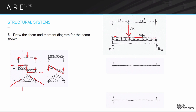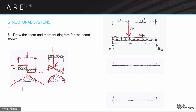At any given point, the value on the shear diagram tells you the slope of the moment diagram at that same point. Near the edge, we have a large positive value, so we know the moment diagram is steep there. At the zero-crossing of the shear diagram, the moment diagram is flat. On the negative side of the shear, the moment diagram curves back down. So with a uniform load, you get triangles on the shear diagram and curves on the moment diagram; with a point load, you get rectangular boxes on the shear and straight angled lines on the moment diagram.